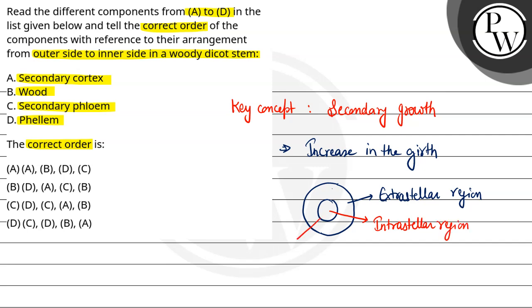Aur inki demarcation kaun kar rahe hain? Yeh layer, jise hum kahte hain, pericycle. So kyunki question mein humein outer side se sequence batana hai, to isliye hum shuruaat karte hain extrastelar region se.